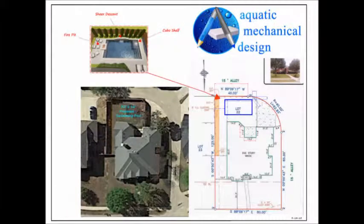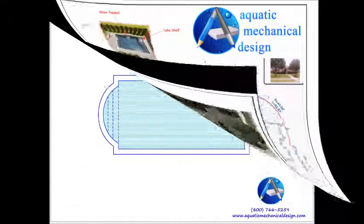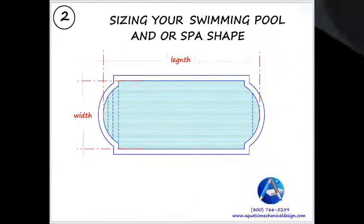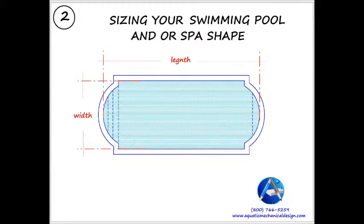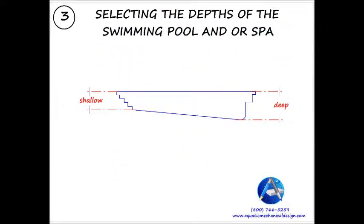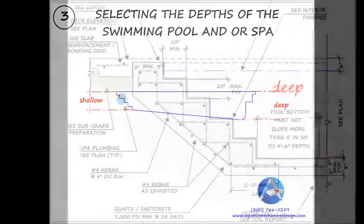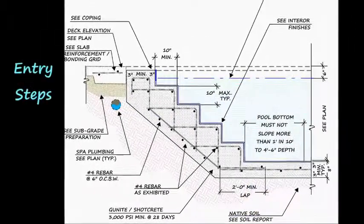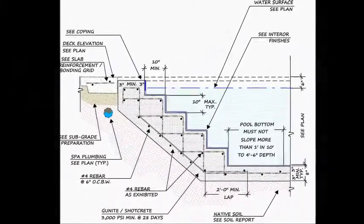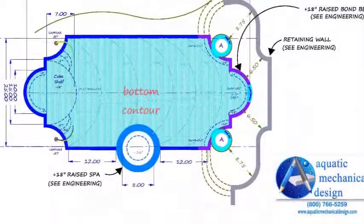Our approach starts with a selected or developed shape that then becomes dimensionally laid out proportionate to the yard space that is available. The length and width are part of these considerations, together with the shallow and deep end desired depths. The entry steps will also become part of the construction intention descriptions, as well as the rate of rise for the pool's bottom contouring.